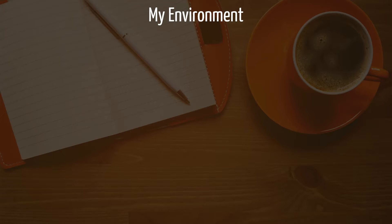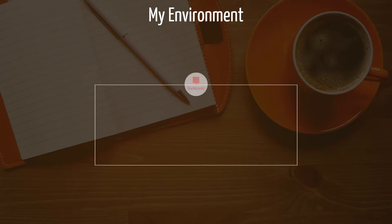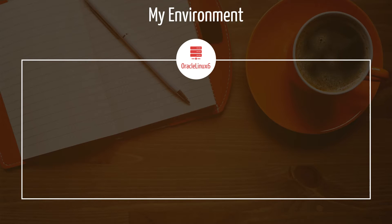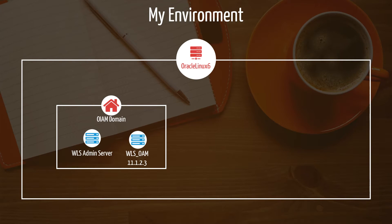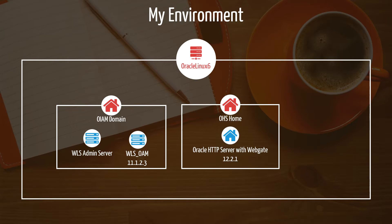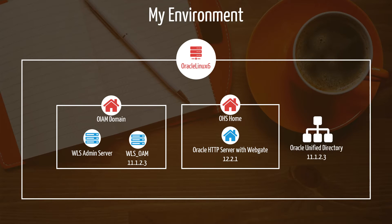Before starting, let me tell you about the environment I'll be using today. I'm using Oracle Linux 6.7 64-bit virtual machine and I have my Oracle Identity and Access Management product installed and configured. The version of Oracle Access Manager I'm using is 11.1.2.3. I have OHS 12c installed and configured in standalone mode. In 12c, WebGate is installed as part of OHS installation, but if you are using 11g version of OHS, you need to install WebGate separately. I also have Oracle Unified Directory 11.1.2.3 installed and configured with some sample users.